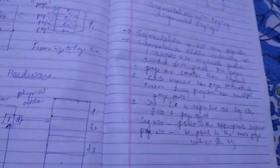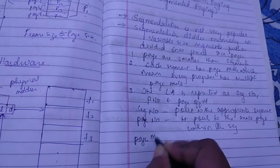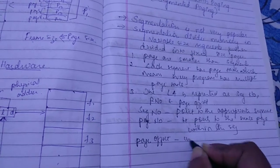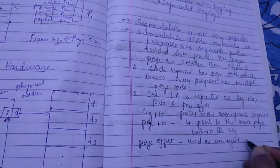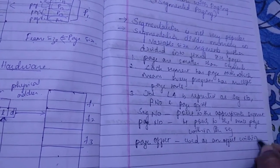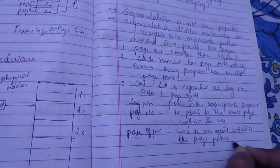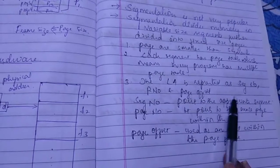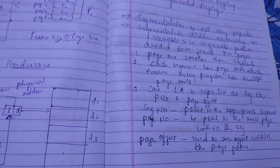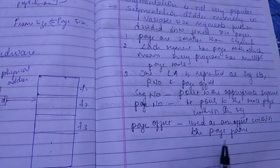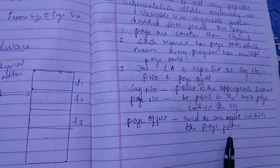And here, page offset is used as an offset within the page frame. So segment number points to the appropriate segment. Page number points to the exact page that is within the segment. And page offset is used as an offset within the page frame. Each page table contains the various informations about every page of the segment.